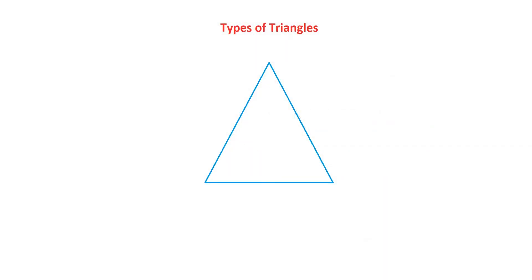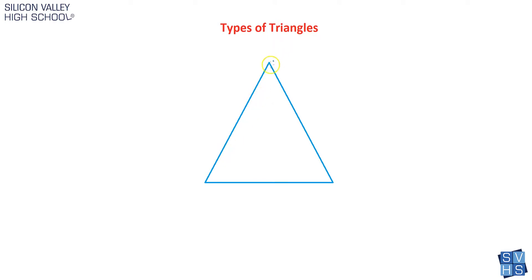The weird thing about learning the types of triangles is just how many there are. When you're a kid, you learn what a triangle is and then you pretty much move on — triangle has three sides, done. But actually, based on information about the sides and the angles, there are different names and classifications. Those are the two broad categories: you can learn about triangles from information about their sides, or from information about their angles.